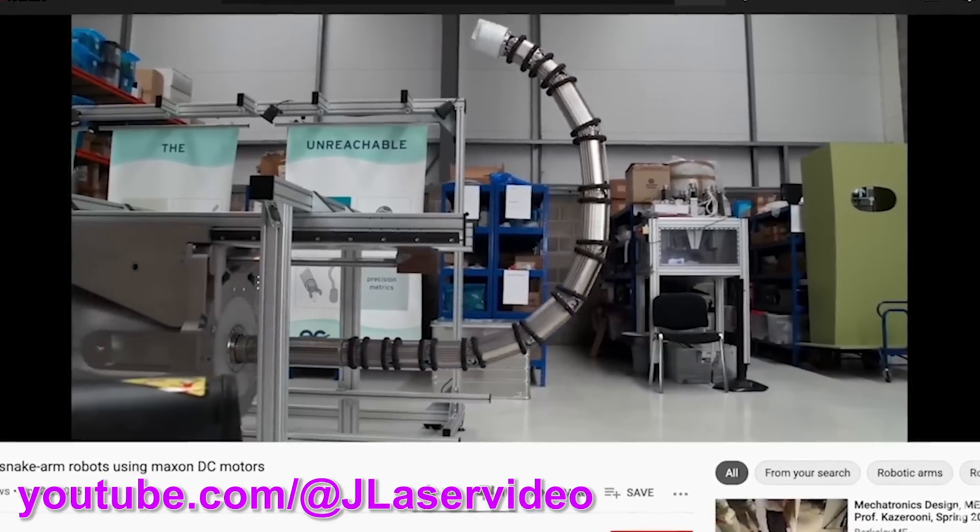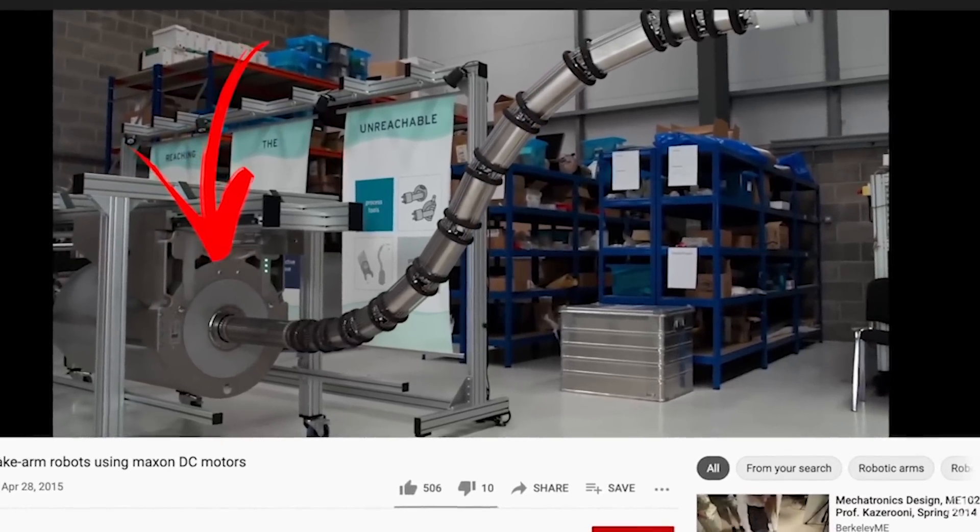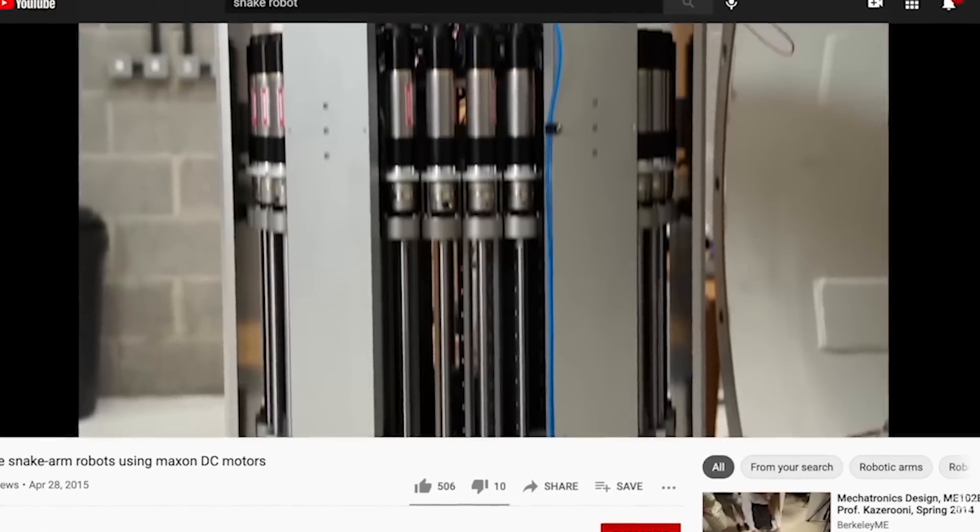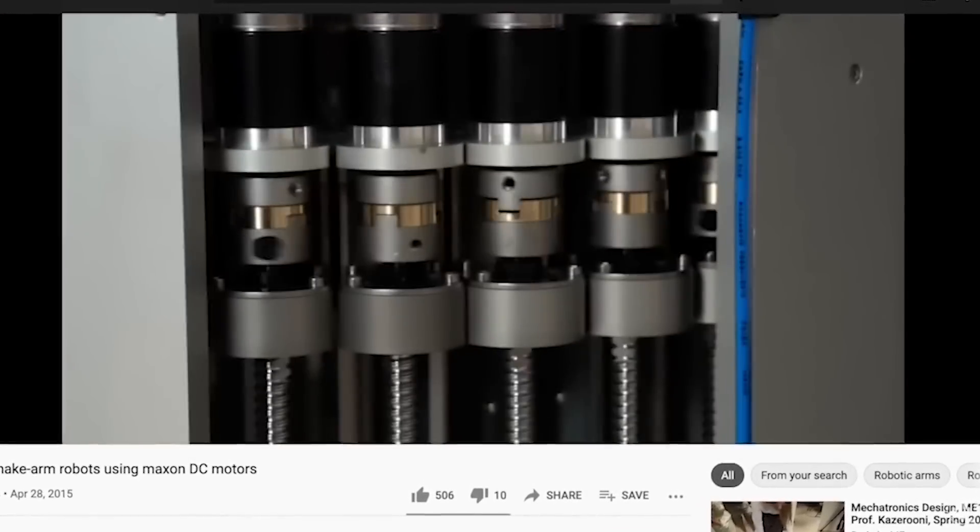As Jake pointed out in the video, most commercial tentacle robots use a huge bank of high power actuators, and that's mainly because these actuators have to support the mass of the whole tentacle.